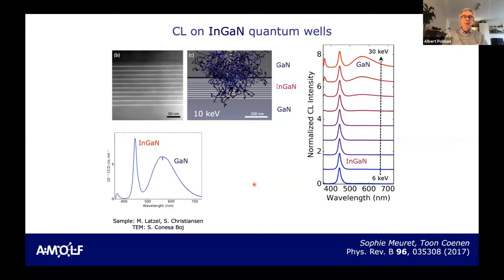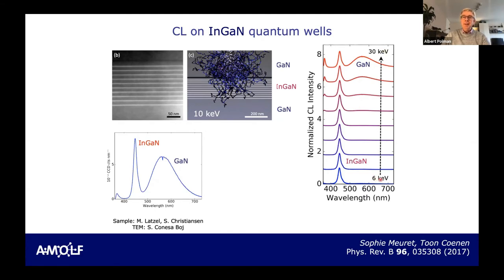Let's start with a relatively simple example: indium gallium nitride quantum wells embedded in gallium nitride. You see the cross-section TEM here. We come in with 10 kV electrons — here's the casino simulation. The electron creates a big cascade, electron-hole pairs move around, get trapped in these quantum wells, and give CL. We get InGaN quantum well emission and GaN emission from the substrate. At 6 kV we mostly see quantum well luminescence; at higher energy the electrons penetrate deeper, giving larger contributions from the GaN substrate. This is a conventional type of CL that people in III-V semiconductor technology use all the time.